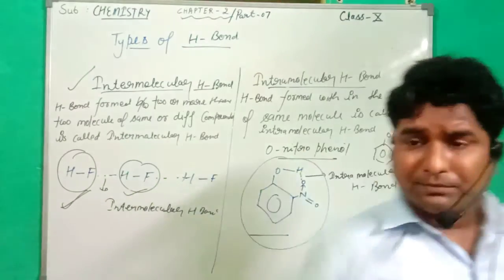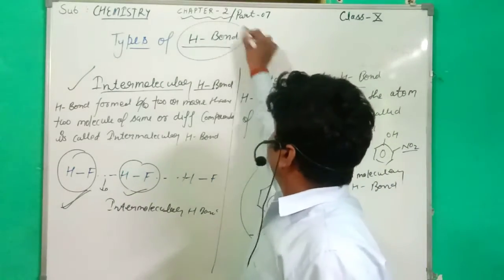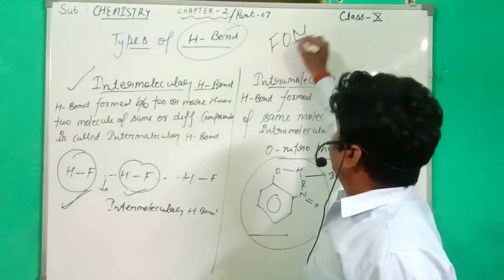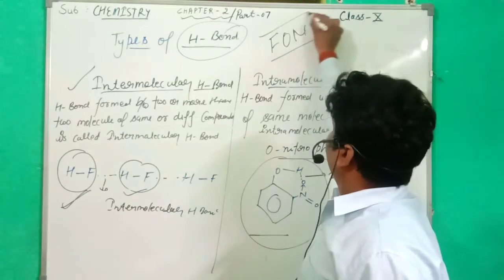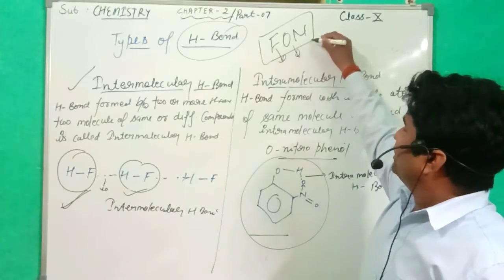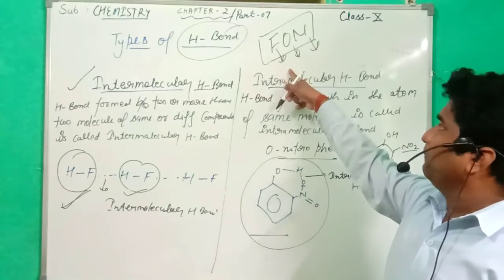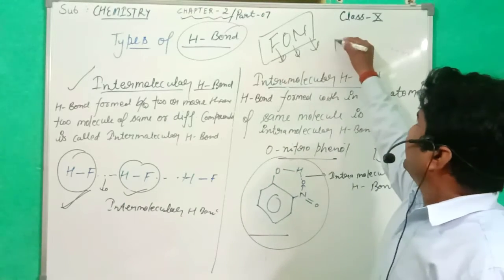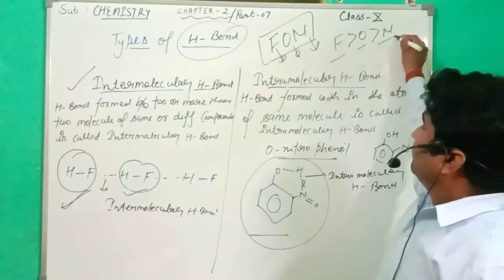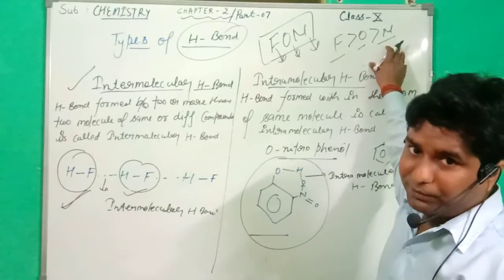One more thing: the Hydrogen Bond is formed by three elements — F (Fluorine), O (Oxygen), and N (Nitrogen). The order of strength of the Hydrogen Bond is: Fluorine is greater than Oxygen, which is greater than Nitrogen, due to their electronegativity.